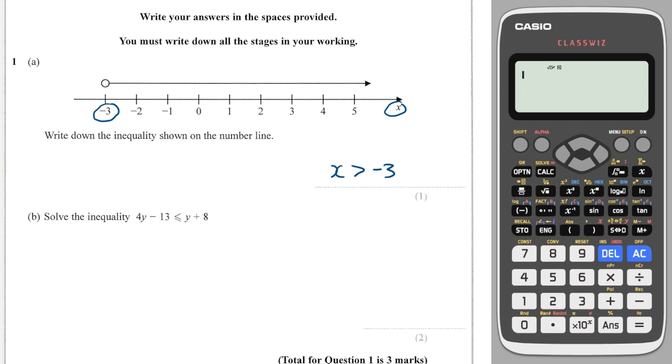And now solving this equation, it's important to move the smallest y value. Now in this case, the smallest y value is 1y, so I'm going to subtract 1y from both sides, which gives me 3y minus 18 is less than or equal to 8. I'm going to add 13 to both sides, which is going to give me 21. So y is less than or equal to 7.